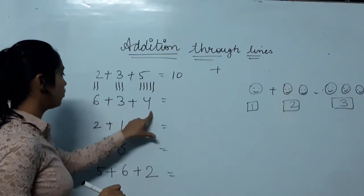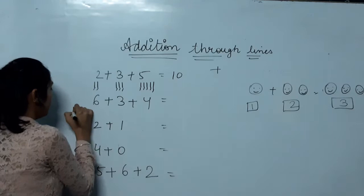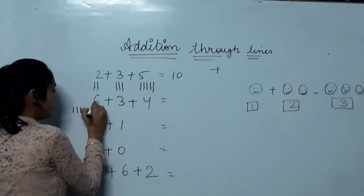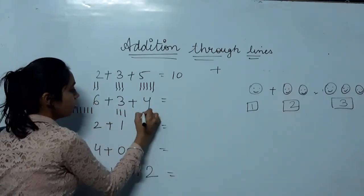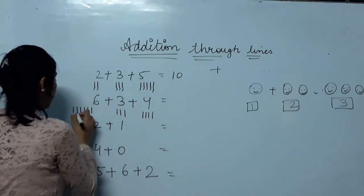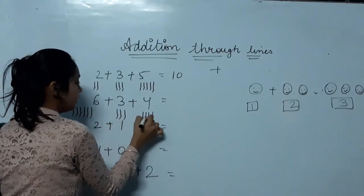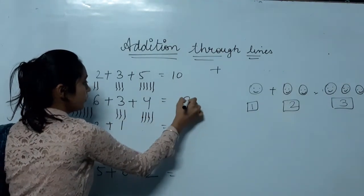Similarly, here we have six, three, four. What do we do with these three? We add them. You draw the lines. One, two, three, four, five, six. One, two, three. One, two, three, four. Now what do you do? You count them. One, two, three, four, five, six, seven, eight, nine, ten, eleven, twelve, thirteen. So the answer will be thirteen.